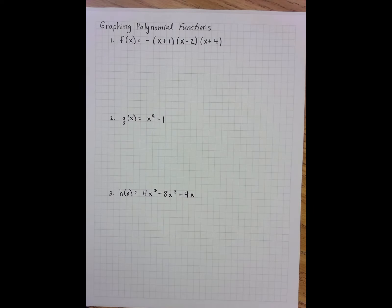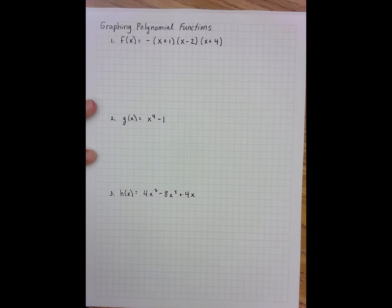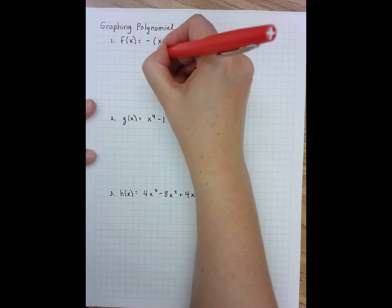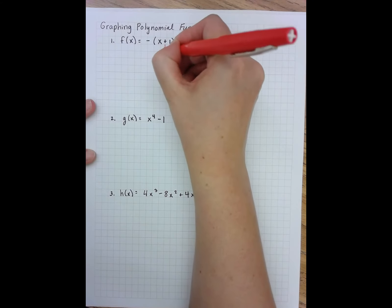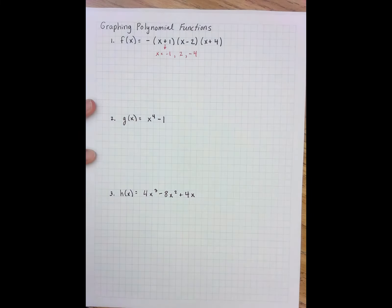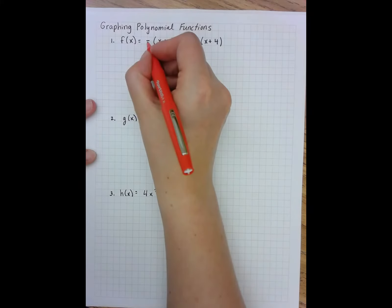In class you've been learning about graphing polynomial functions, so we're going to look at a couple of examples. In our first example, the function is given in factored form, which means I can right away see my x-intercepts: negative one, two, and negative four.